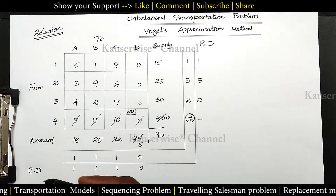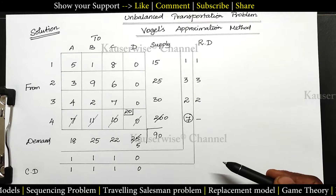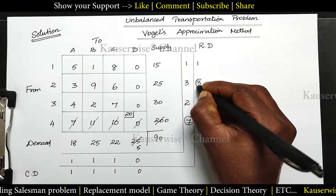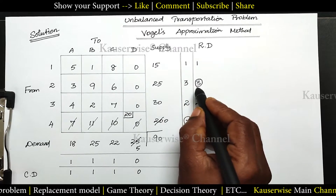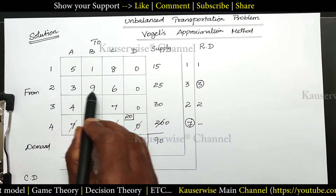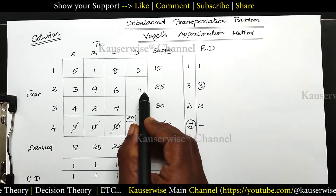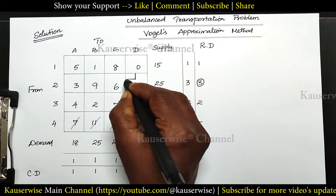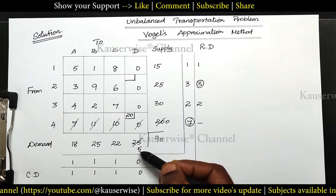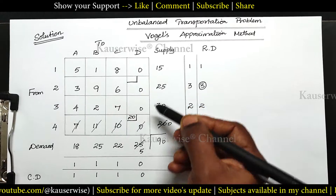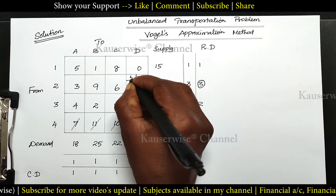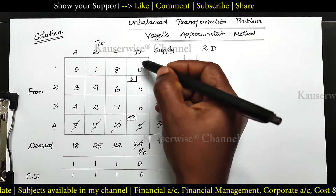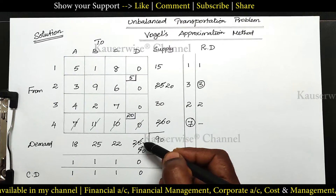After finding the row difference and column difference, we need to select the highest penalty. Which is the highest penalty? 3 is the highest penalty. Select this particular 3, which represents this particular row. Now we need to select the least cost in this row — 0 is the least cost. Allocating this cell by comparing demand and supply: demand 5, supply 25 — 5 is the least value. So assign 5 here, balance becomes 20, and here 0. So this particular column will get cancelled.